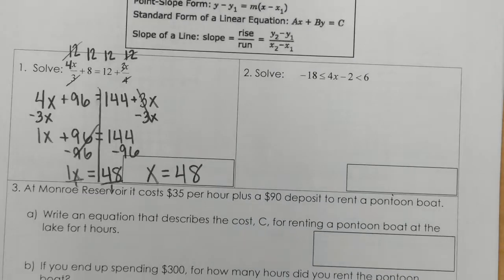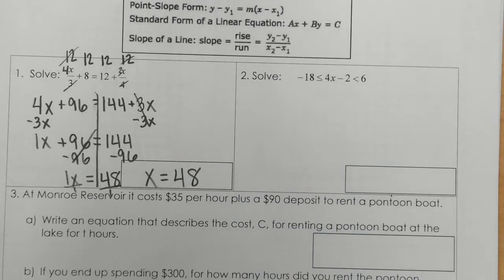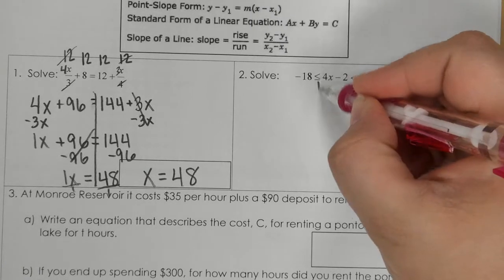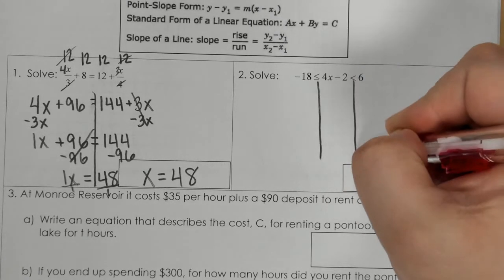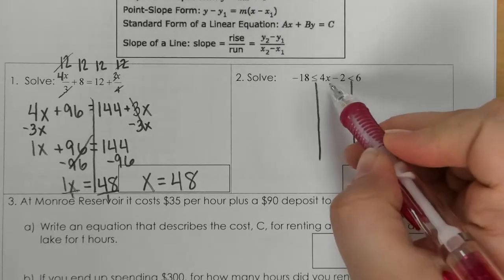For number 2, we can go ahead and draw our lines, if that helps us. And our goal is to get that x by itself.